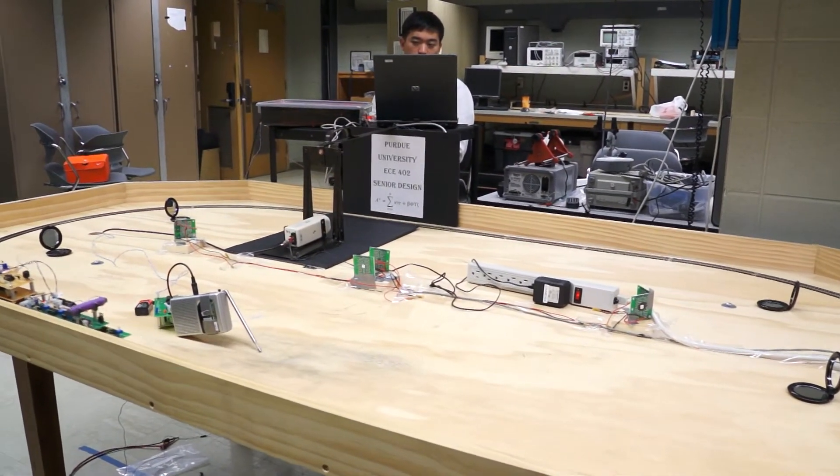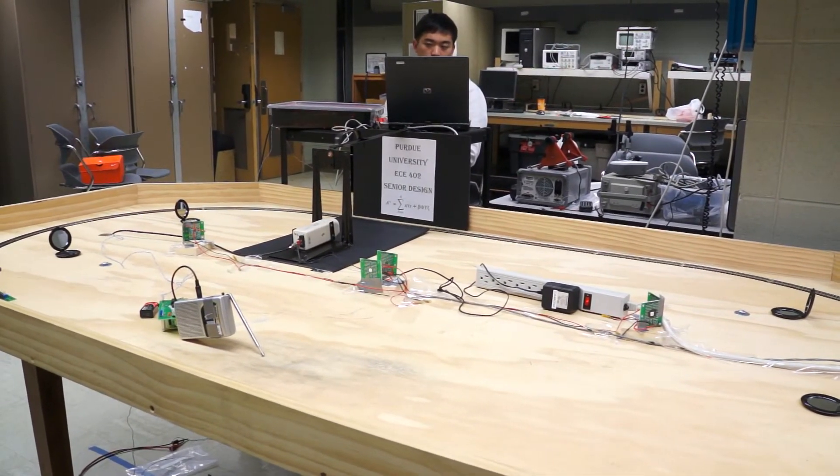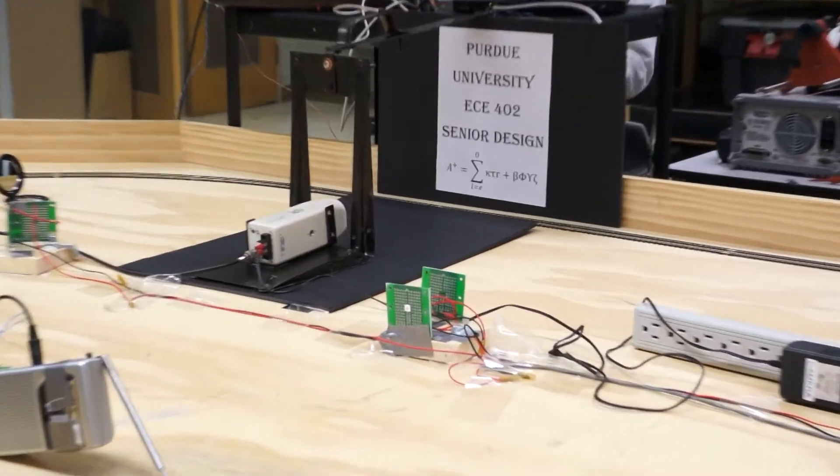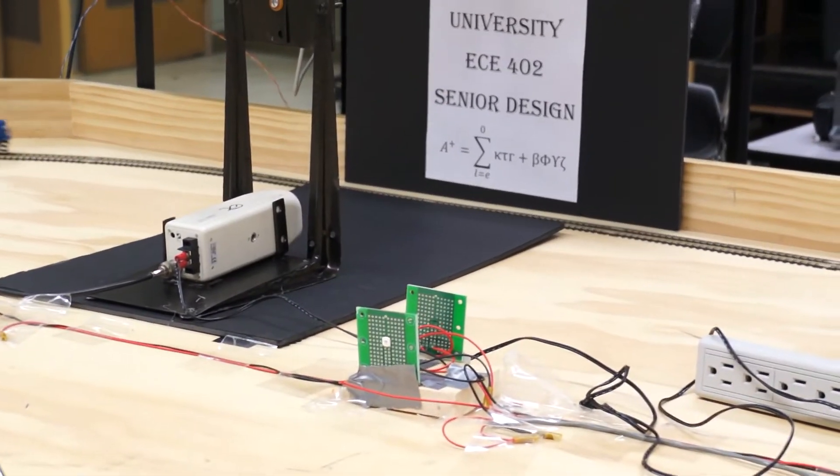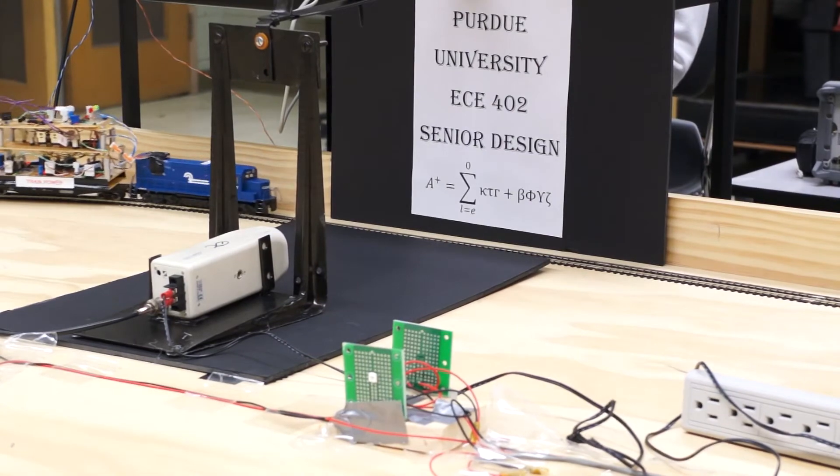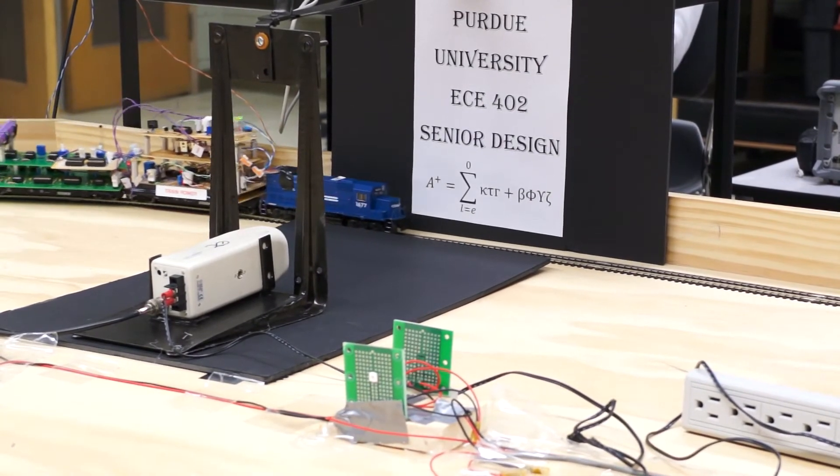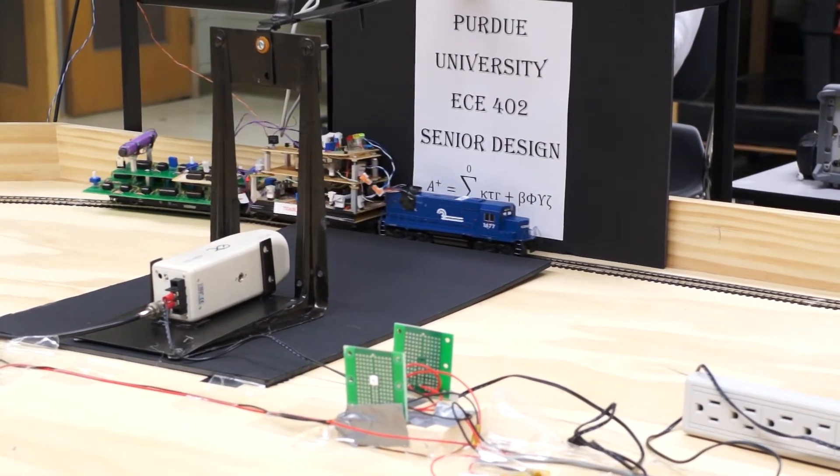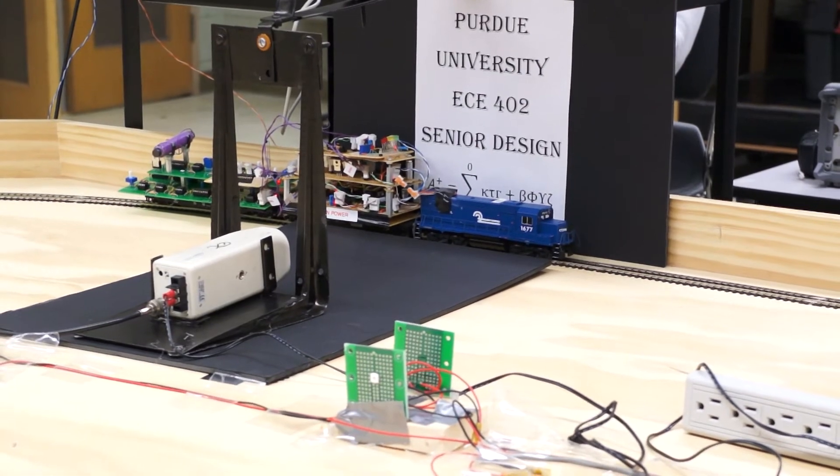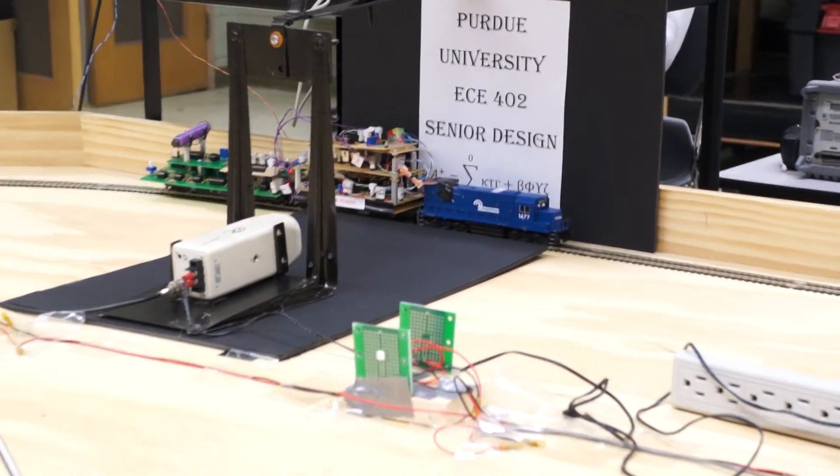We can show that the train will stop at the same location independent of its current speed. Set the speed to 11 centimeters per second and activate the automated hold control. This concludes our final demo.